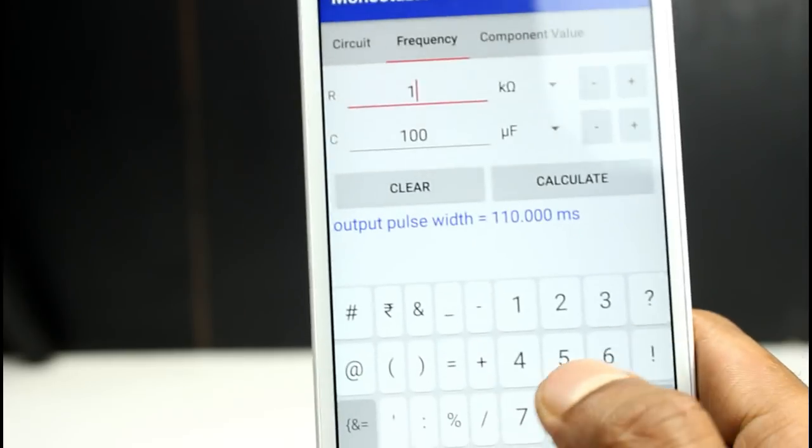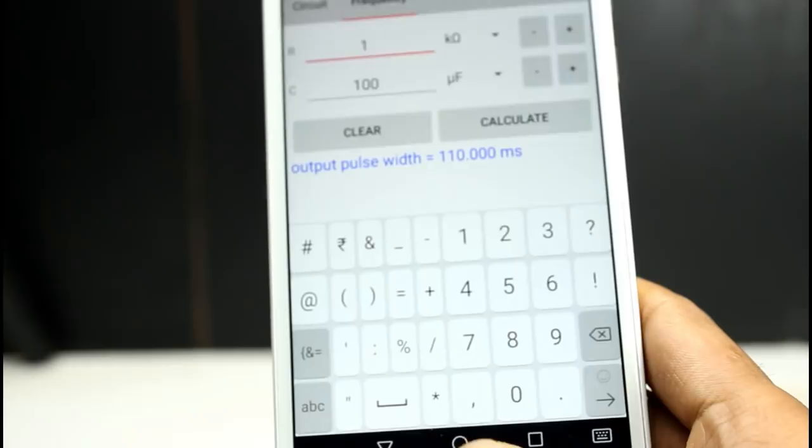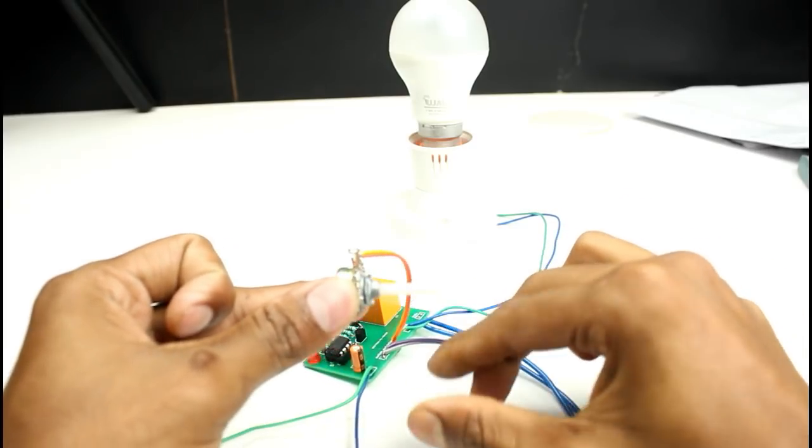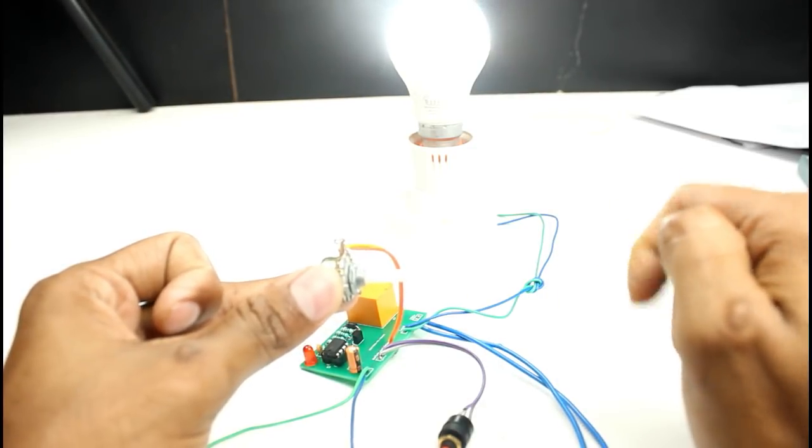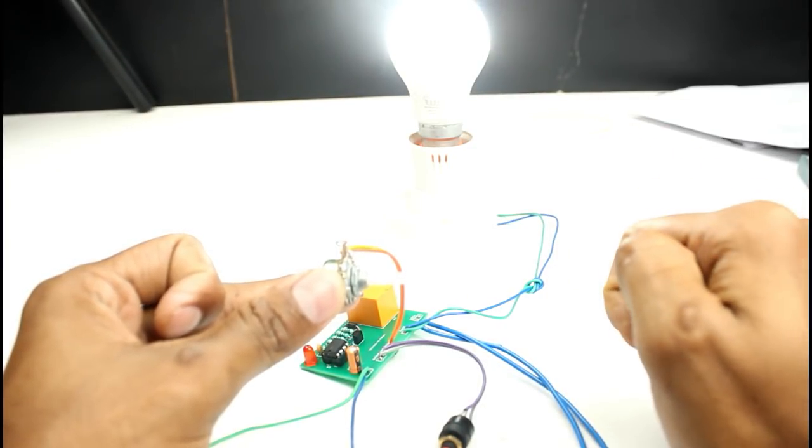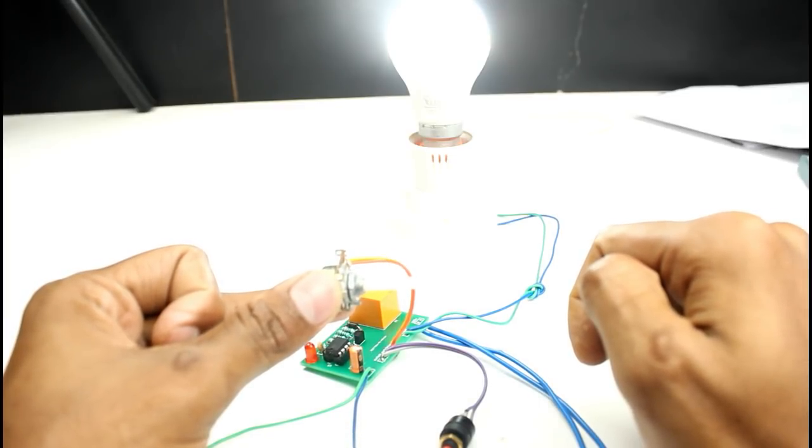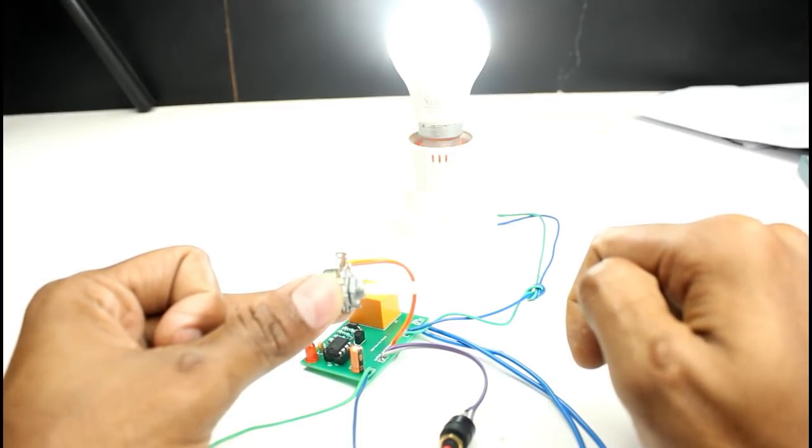I hope you understand this process. You can get any desired value according to your needs by changing the capacitor and the resistor. Please do not touch any component while the circuit is plugged into 220 volts. I hope you like this video. If you like this video please give a thumbs up. Also subscribe to my channel for more updates. Thanks for watching. See you in my next video.